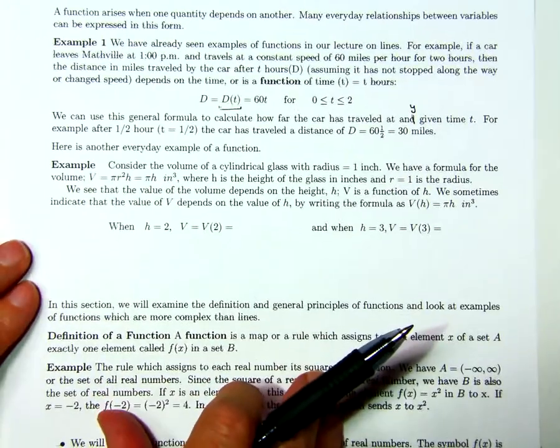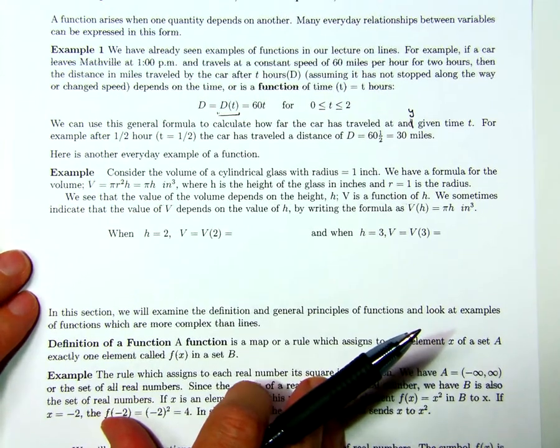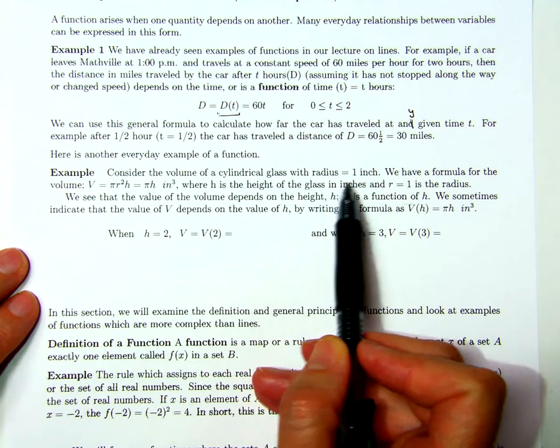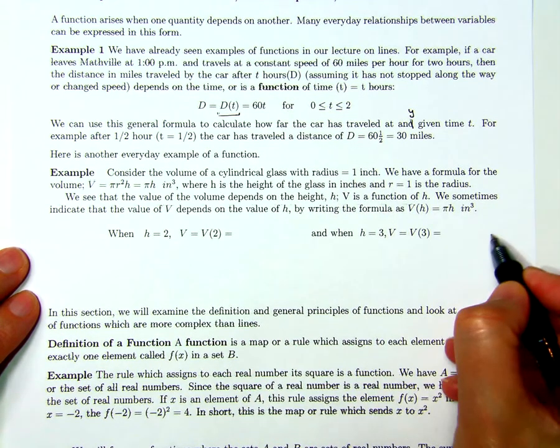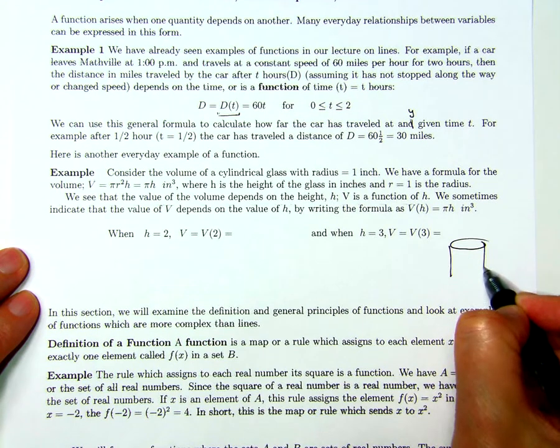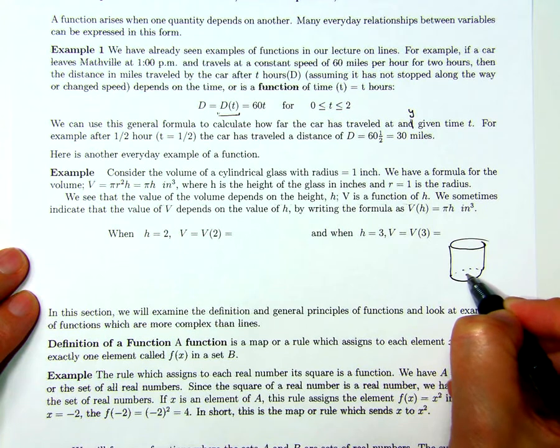Here's another example. Suppose you're trying to calculate the volume of a cylindrical glass with radius one inch. So we have our glass here in the shape of a cylinder. Its radius is one inch, so its diameter is two inches.